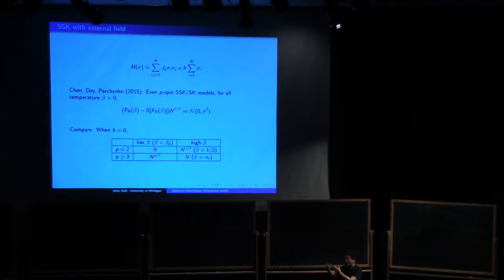Okay, so I'm going to change the subject a tiny bit within here. So far I talked about SSK. But then, in the SSK, there is SSK plus external field, which is also an interesting subject. So this is SSK, two spin SSK. But then, you may think about adding external field. Here's H times summation of sigma i's.